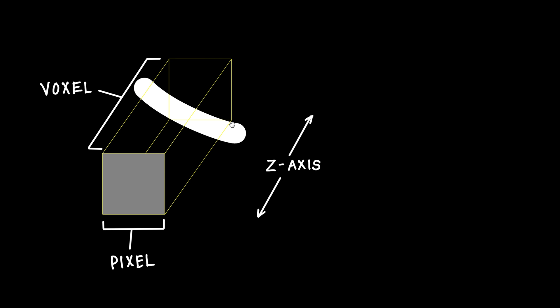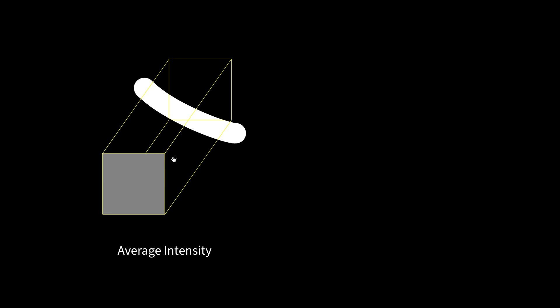Most of the time when you're reviewing a CT, you're reviewing the axial slices using average intensity projection. That means that the pixel value displayed is an average of the densities in that voxel. In this example, I have a vessel going through this voxel which is displayed as bright white, but the pixel isn't white because it's averaging that vessel with the surrounding black lung, so instead you get a gray value.